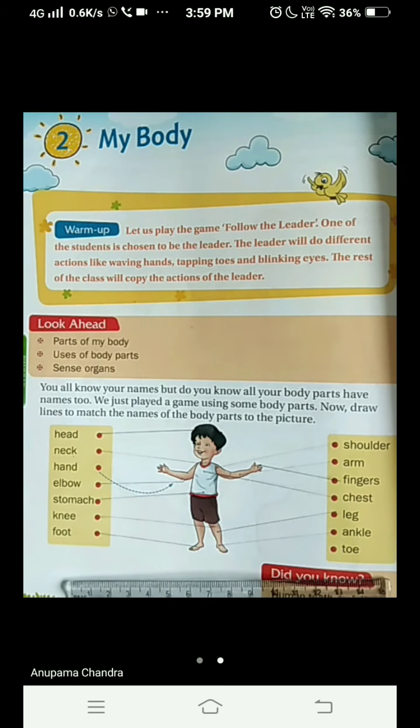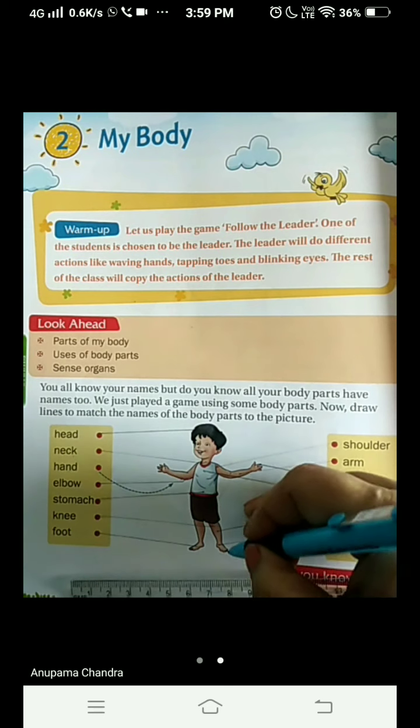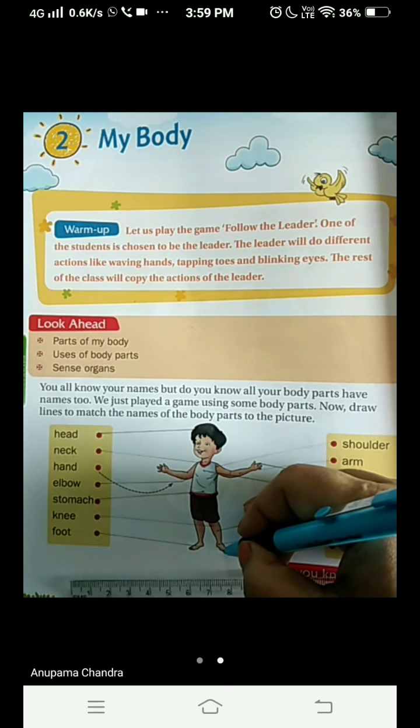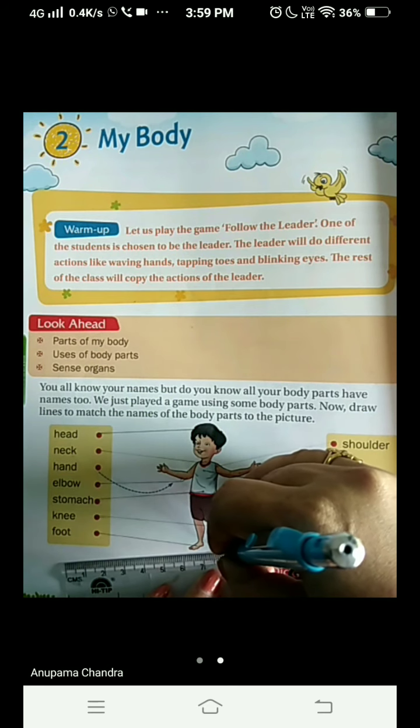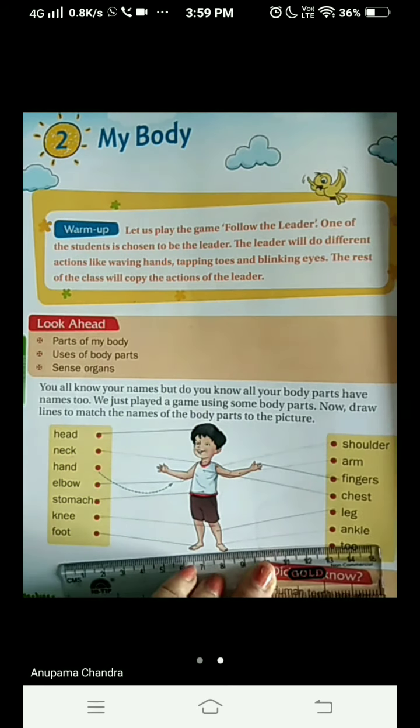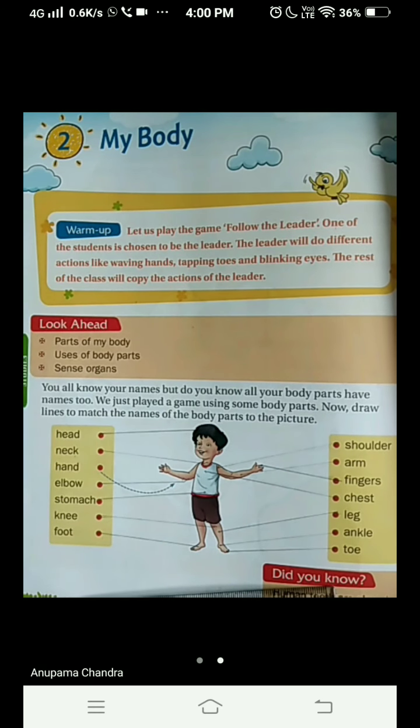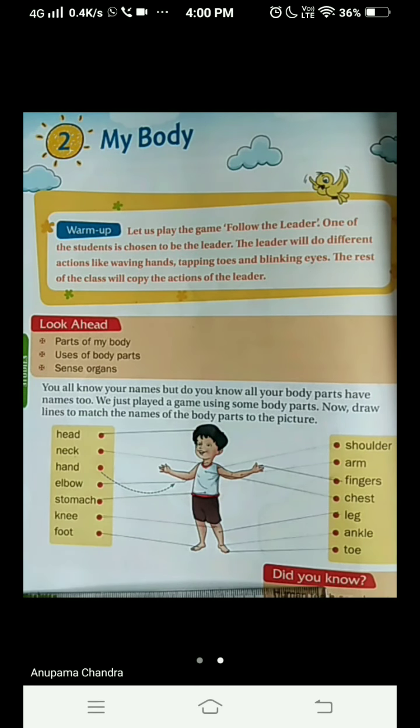And the last one is toe. Toe is the part of your foot. How many toes do you have children? Ten in total, five in two legs, right? Like we have ten fingers, similarly we have ten toes. So hereby we complete the matchings. And this was all for today children. Hope you must have enjoyed the class. Thank you, we'll see you next time. Bye bye.